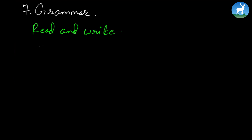Now let's look at the grammar portion here. So here we have, as per the book, number seven — grammar, read and write. So let's look at one of the examples here as given in the book. This is more like jumbled-up sentences and we make a sentence out of it. I'll tell you how.